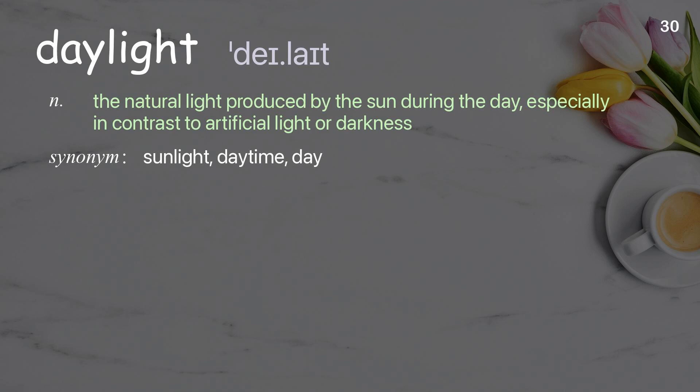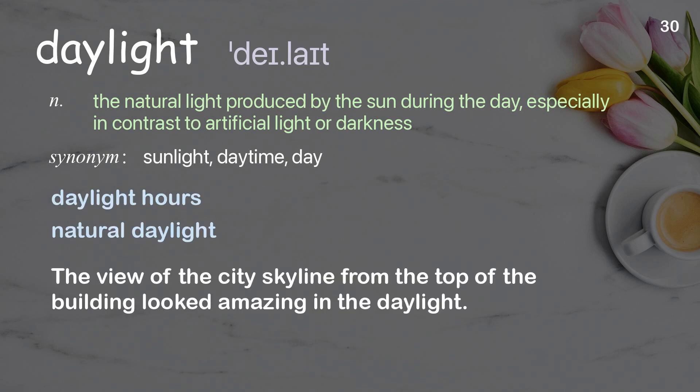Daylight: the natural light produced by the sun during the day, especially in contrast to artificial light or darkness. Examples: daylight hours; natural daylight. The view of the city skyline from the top of the building looked amazing in the daylight.